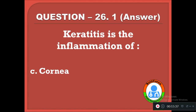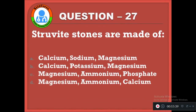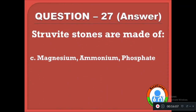Question 28: Struvite stones are made up of — option A: calcium, sodium, magnesium, B: calcium, potassium, magnesium, C: magnesium, ammonium, phosphate, D: magnesium, ammonium, calcium. The correct answer is C, struvite stones are made up of magnesium, ammonium, and phosphate. Struvite stones are one type of kidney stone.